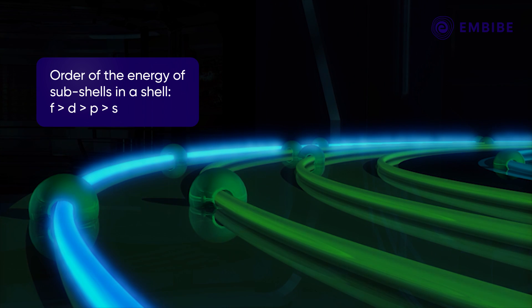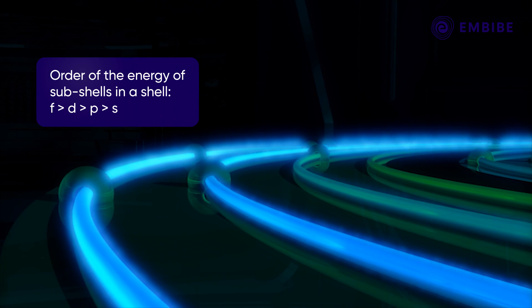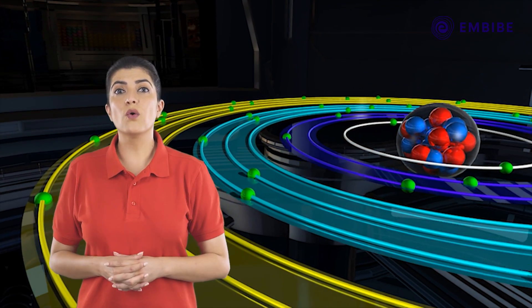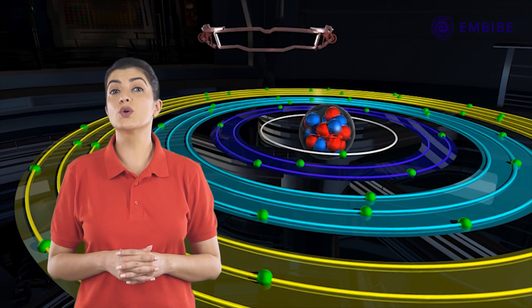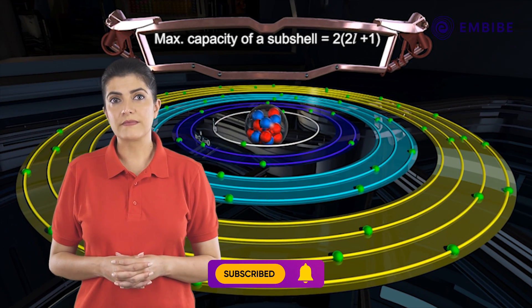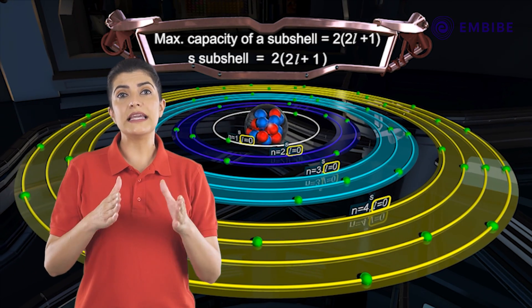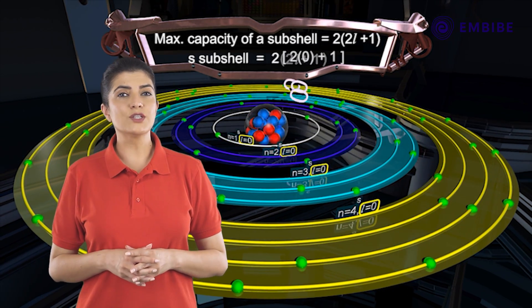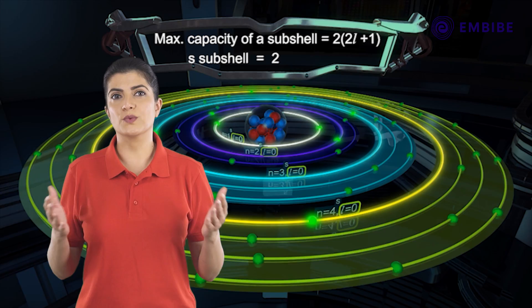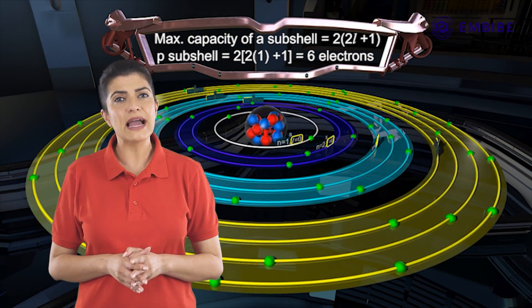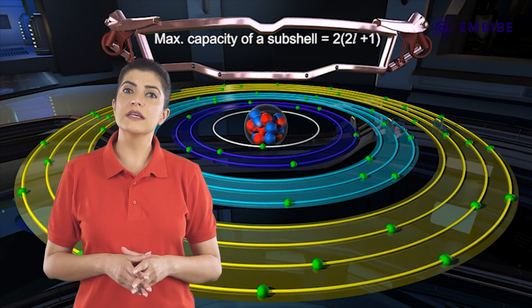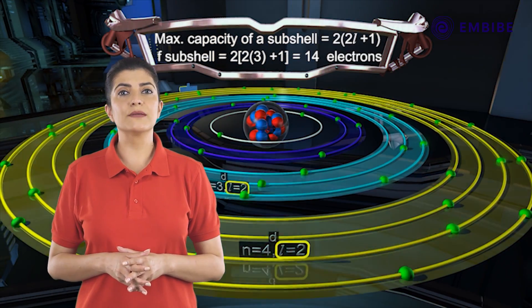Among the subshells, the f subshell has the maximum energy, followed by d, then p, while the s subshell has the least energy. Like every shell, each subshell also has a maximum capacity to hold electrons, given by the formula 2(2l+1). For the s subshell (l=0), the capacity is 2; the p subshell can hold a maximum of 6; and the d subshell can hold a maximum of 10 electrons.